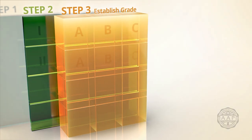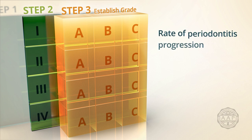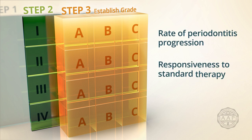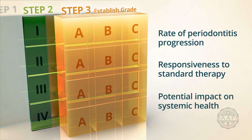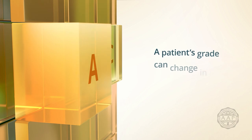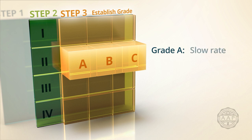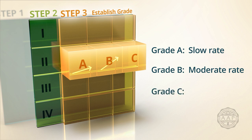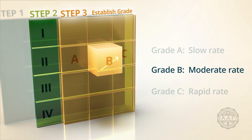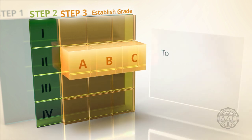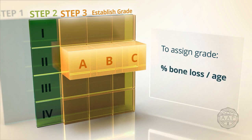Step 3: Establish the grade. Grading indicates the rate of periodontitis progression, the anticipated responsiveness to standard therapy, and potential impact on systemic health. A patient's grade can change in either direction over time. Grade A signifies a slow rate of progression, grade B signifies a moderate rate, and grade C signifies a rapid rate. You should assume a grade B for patients unless their clinical history or risk profile indicates either a grade A or a grade C rate of progression. A practical approach to assign the grade is to use the ratio of percent of bone loss to patient's age at the most affected site.